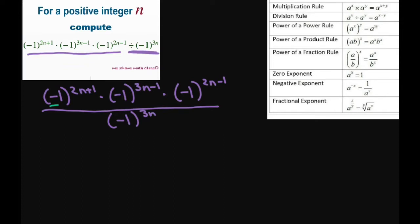Since these have the same base, I can put all this together as (-1) and I'm going to use my multiplication rule or product rule of exponents. So that's going to be 2n+1 plus 3n-1 plus 2n-1. And we still have this (-1)^(3n) in the denominator.